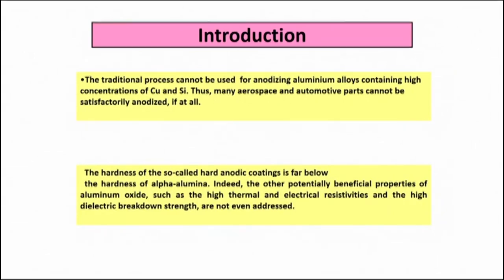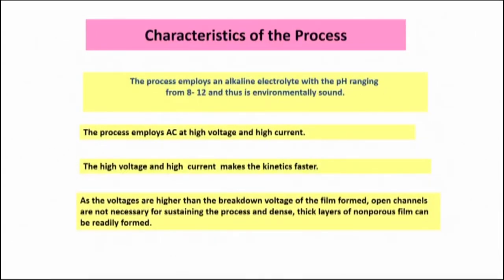Micro arc oxidation can again be applied on the surface of metals like magnesium, titanium, and aluminum which are very prone to oxidation. The process employs an alkaline bath with pH range between 8 to 12, which is environmentally sound and drainage of the solution is not a problem. The process employs AC current at high voltage and high current, which makes the kinetics faster. When the voltage is higher than the breakdown voltage of the film, there is naturally formation of open channels.